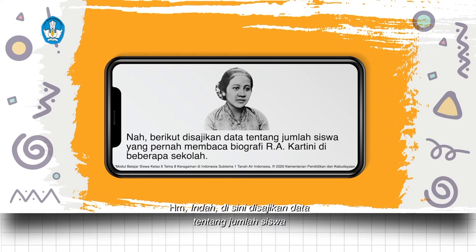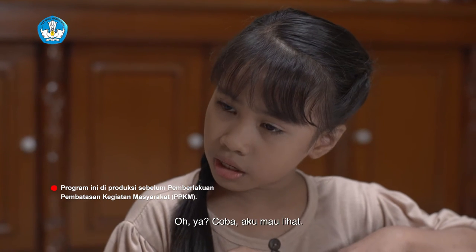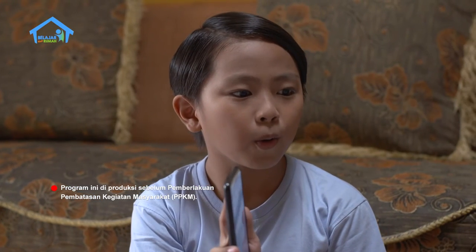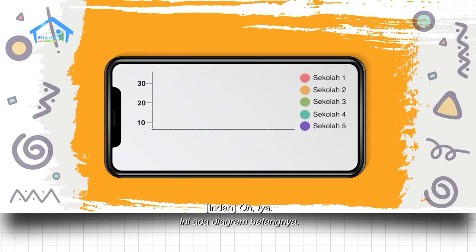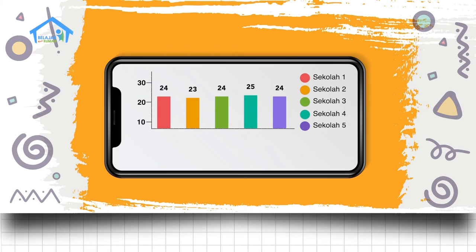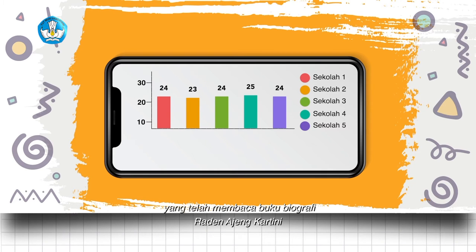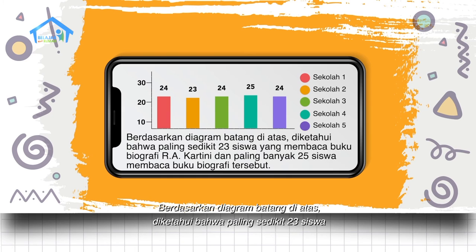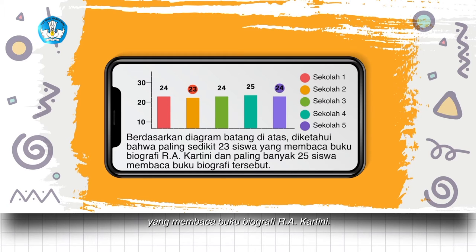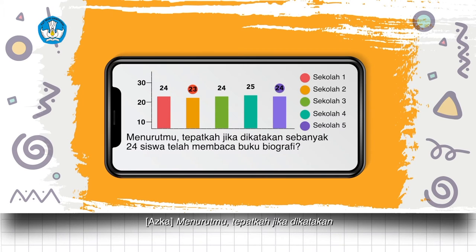Indah, di sini disajikan data tentang jumlah siswa yang pernah membaca biografi R.A. Kartini di beberapa sekolah. Coba aku mau lihat. Oh iya, ini ada diagram batangnya. Kita teliti diagram ini satu persatu yuk. Rupanya diagram ini berisi data banyaknya siswa yang telah membaca buku biografi R.A. Kartini di lima sekolah. Berdasarkan diagram batang di atas, diketahui bahwa paling sedikit 23 siswa dan paling banyak 25 siswa membaca buku biografi tersebut. Menurutmu, tepatkah jika dikatakan sebanyak 24 siswa telah membaca buku biografi?